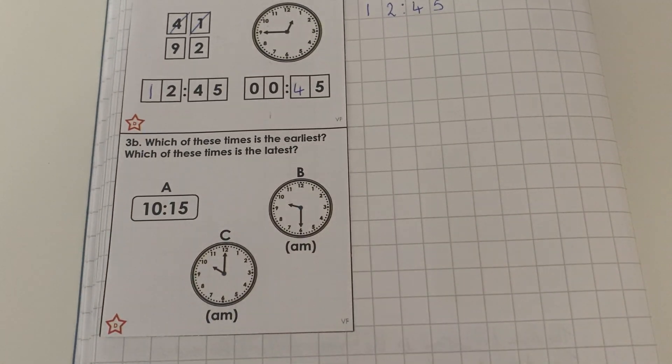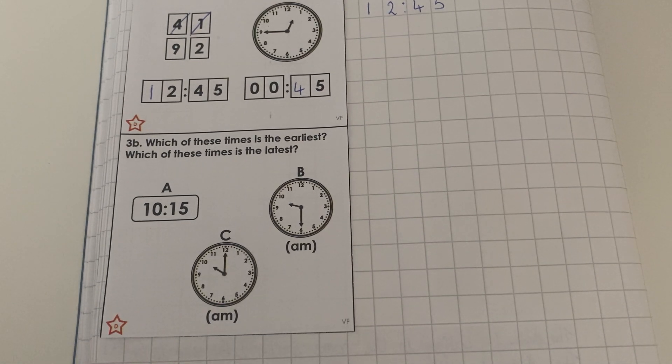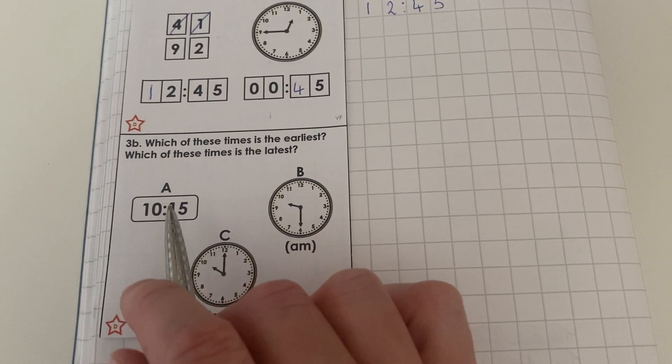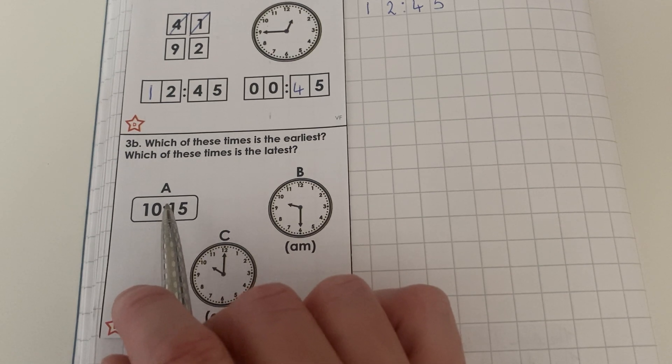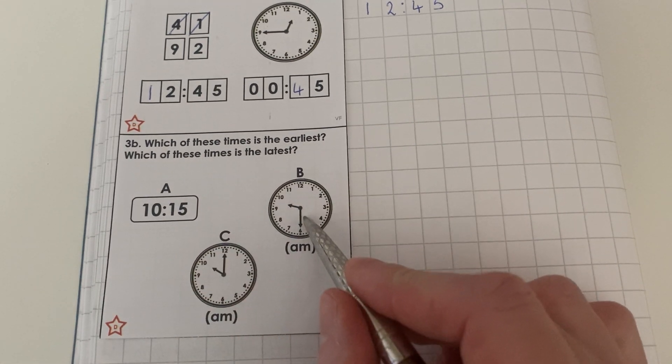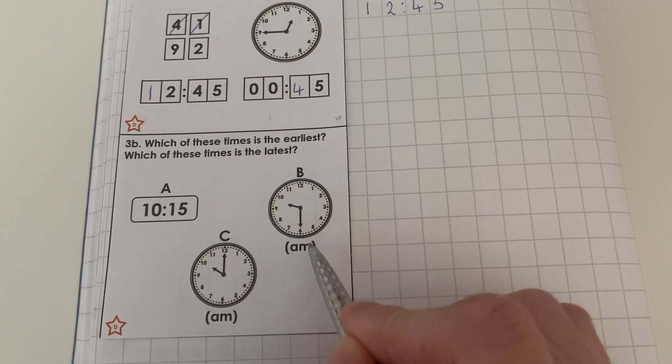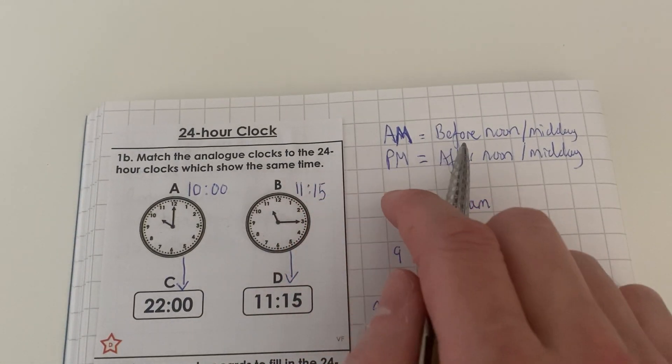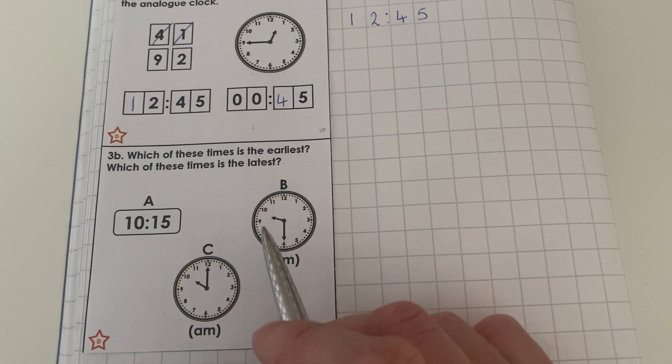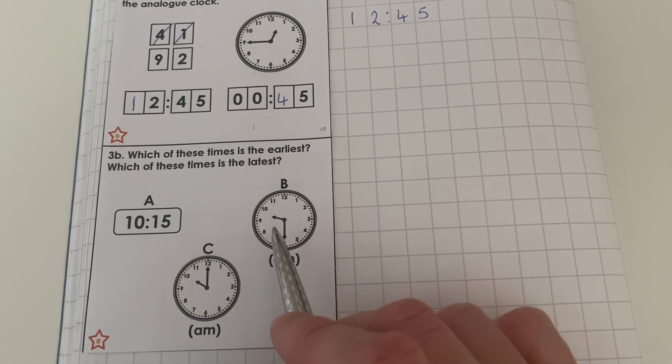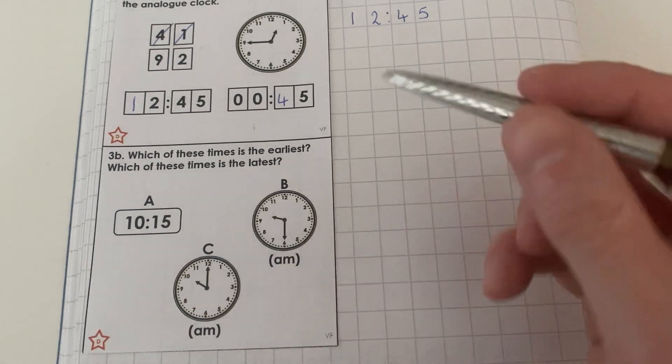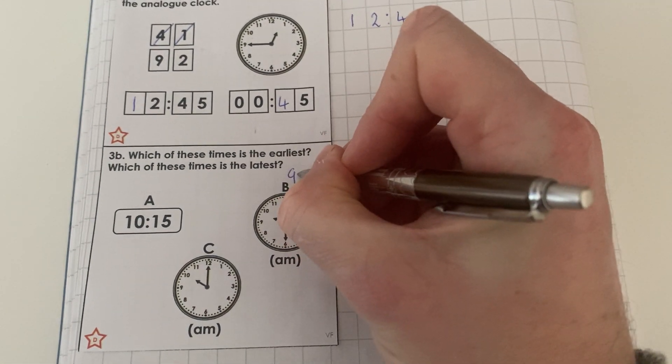So it says here now, which of these times is the earliest, which of these times is the latest. Now we can see here, this is our 24 hour clock. And because it's out of 24 hours, if it's before 12 o'clock, we know it's in the morning. And because it says 10:15 here, we know that's in the morning. We can also see here that on B, it's got AM written in brackets. And if we go back up to here, AM is before noon. So this time is in the morning. But let's work out what the time actually is, to see if this is earlier or later than 10:15. So we go to the hour hand. And as you can see, it's just gone past nine. So we must write nine in our hours.